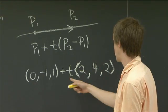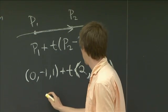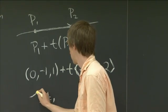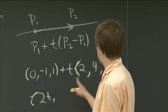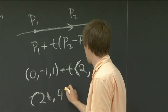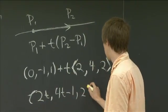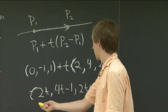And this is the vector connecting those. And so we can write, we can just combine these two, and we get 2T, 4T minus 1, and 2T plus 1.